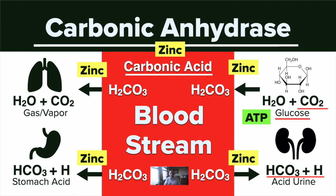That is why zinc is an alkaline mineral. This enzyme is putting every fluid in the body at the right pH — whether it's synovial fluid, cerebrospinal fluid, menstrual fluid, seminal fluid, digestive juices, salivary fluid, tear fluid, or sweat. Every fluid in us is a result of that bicarbonate system.